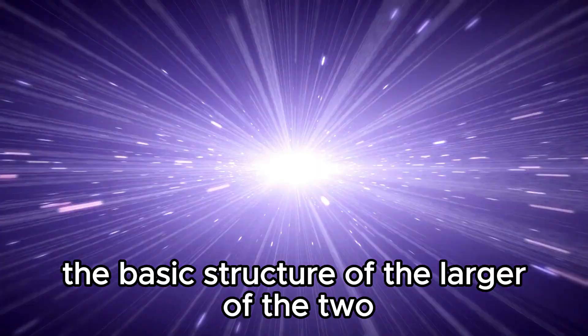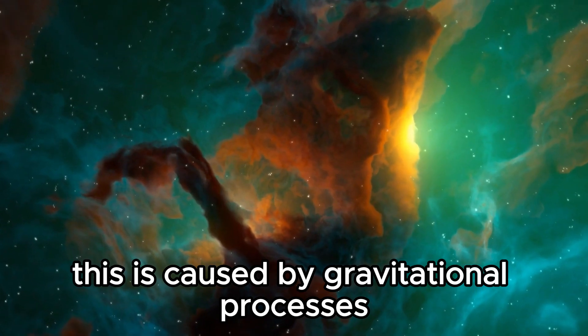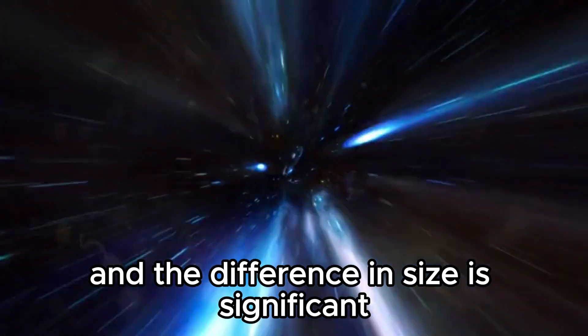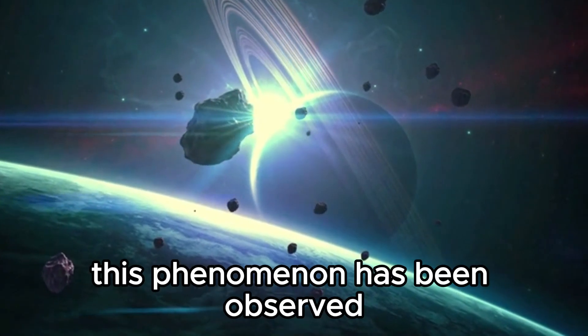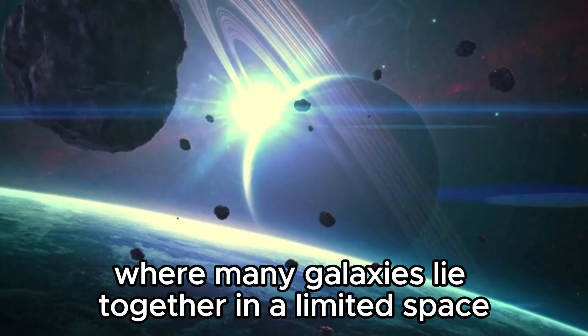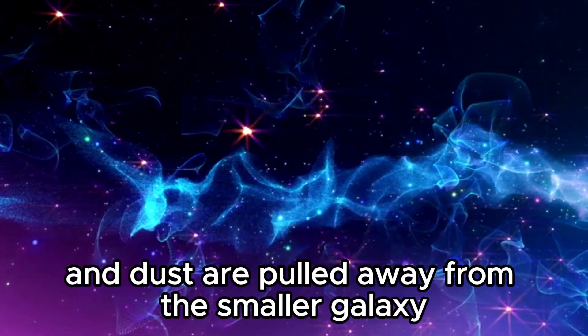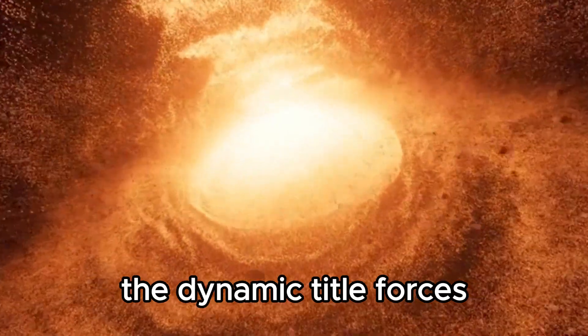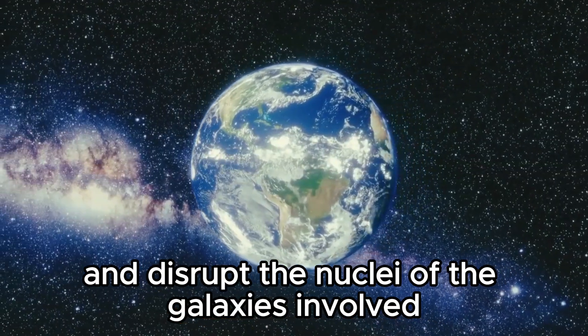The basic structure of the larger of the two remains almost unchanged. This is caused by gravitational processes. If galaxies come close enough to each other because of their mutual attraction and the difference in size is significant, this can result in the disintegration of the smaller galaxy. This phenomenon has been observed mainly in galaxy clusters where many galaxies lie together in a limited space. The gravitational interaction leads to a dynamic response where stars, gas, and dust are pulled away from the smaller galaxy and incorporated into the larger one. The dynamic tidal forces can lead to significant star formation phases and disrupt the nuclei of the galaxies involved.